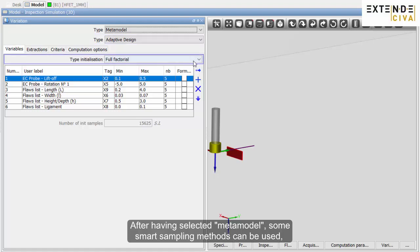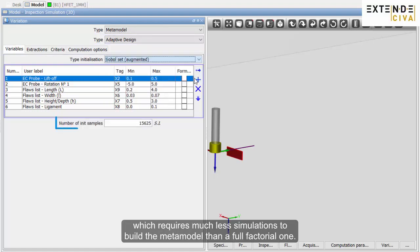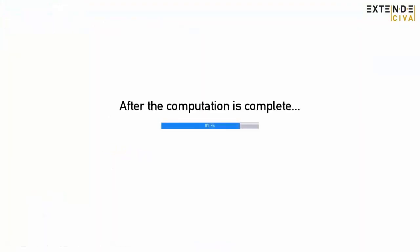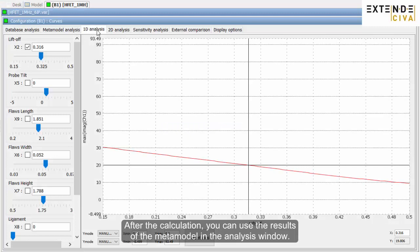After having selected metamodel, some smart sampling methods can be used, which requires much less simulations to build the metamodel than a full factorial one. Now you can run simulations.